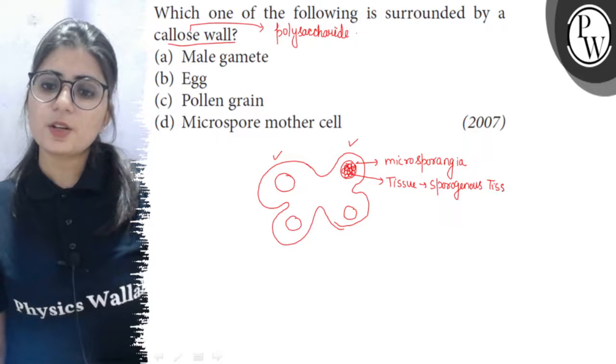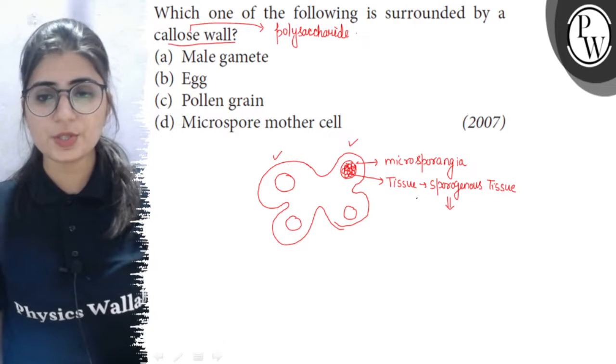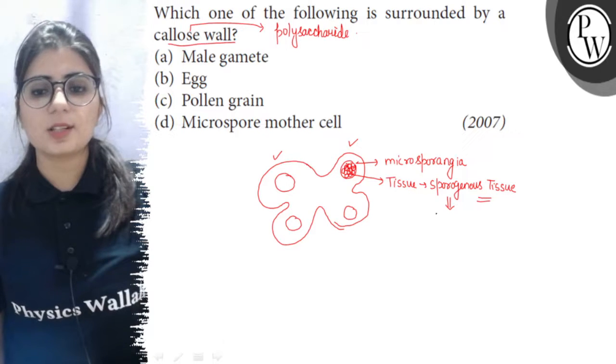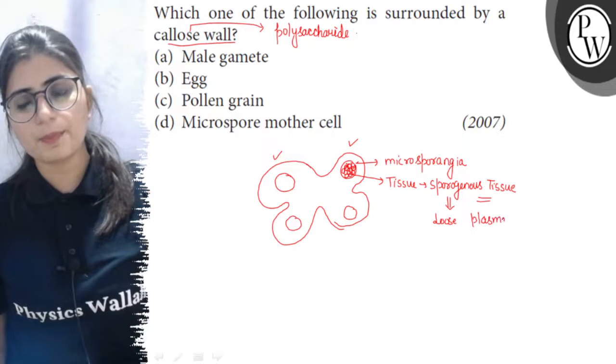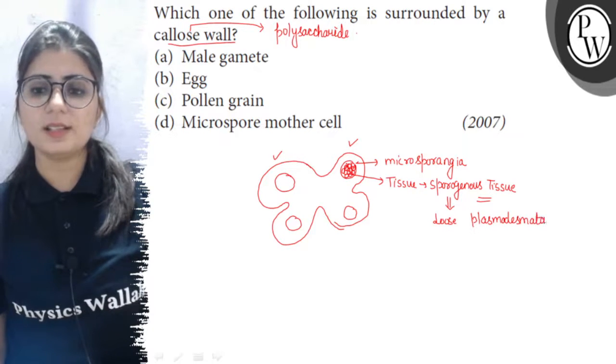Now, during microsporogenesis, it means the formation of microspores, what happens? These cells of sporogenous tissue, they lose their plasmodesmata connections. So, they lose their plasmodesmata which are the connections between adjacent cells.